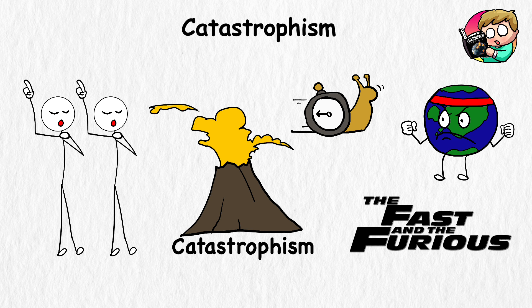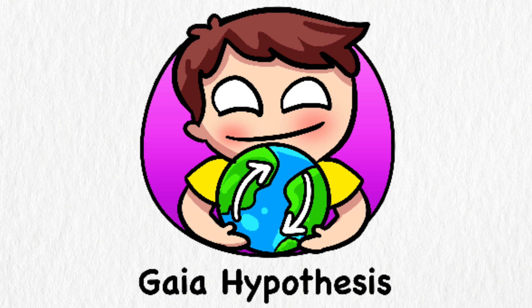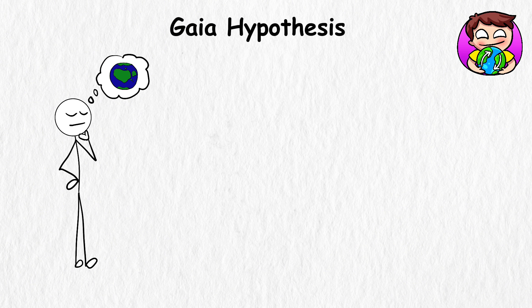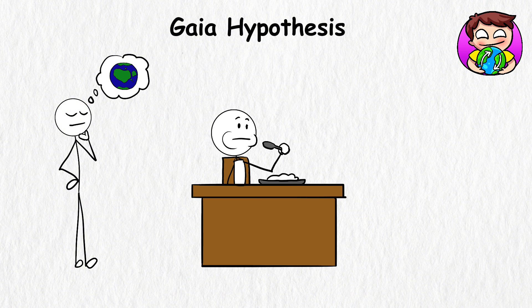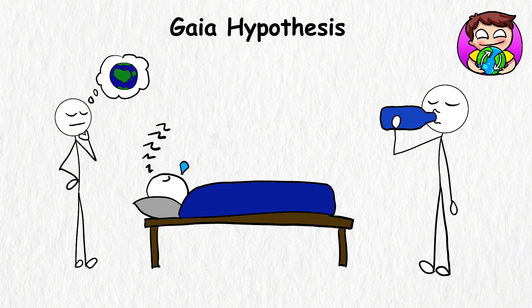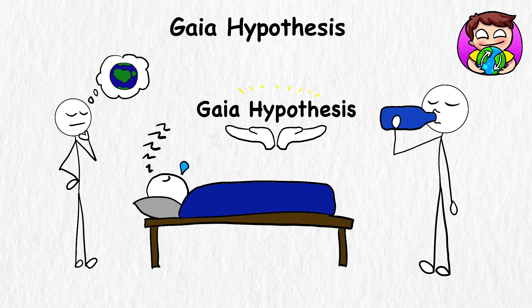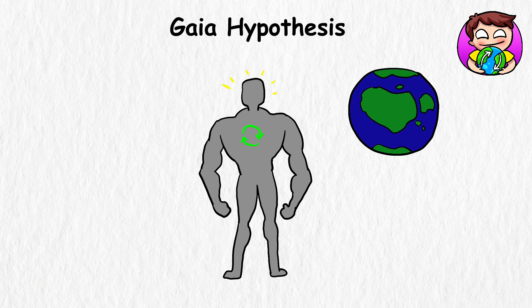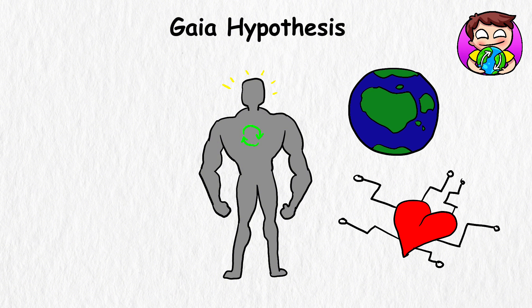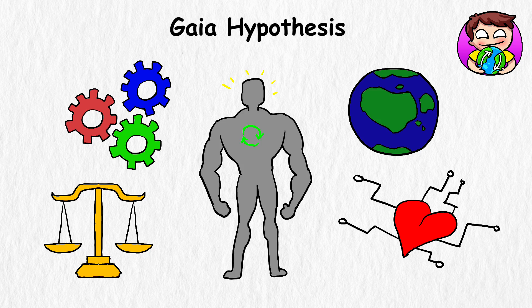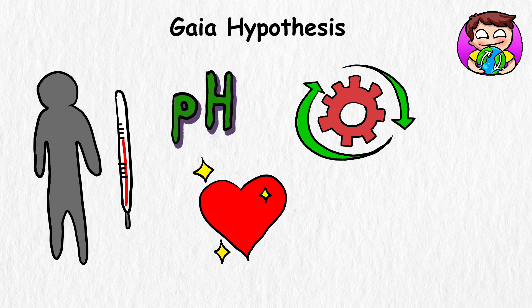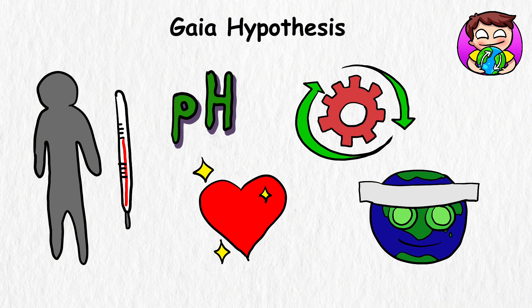GAIA HYPOTHESIS. Imagine yourself as the Earth. You know what you must do to care for yourself, as you eat properly, drink plenty of water, and rest regularly. That's what the GAIA HYPOTHESIS proposes, as Earth is believed to be this massive being that knows how to self-regulate. The theory states that Earth is a living system with different parts that work together to keep things in balance. Just like your body maintains its temperature and pH levels to stay healthy, Earth's systems might be doing the same thing. Think of it as Earth's way of giving itself a spa day, but instead of facials and massages, it's balancing gases and temperatures.